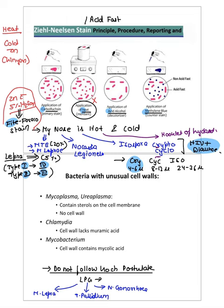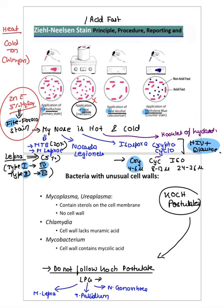Now, Koch's postulates. In exams, exceptions are more important than the postulates themselves. The mnemonic is LPG: L = Mycobacterium leprae, P = Treponema pallidum (causes syphilis), G = Neisseria gonorrhoeae. These organisms do not follow Koch's postulates.